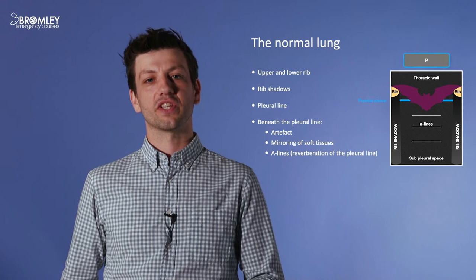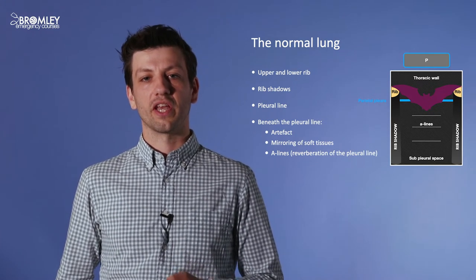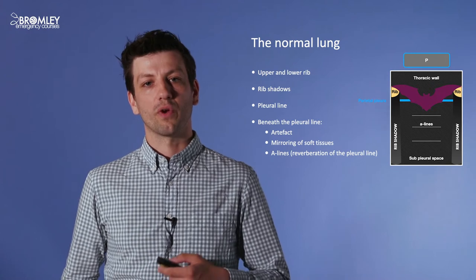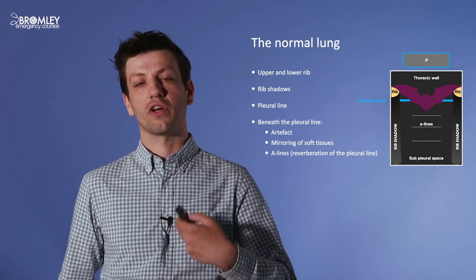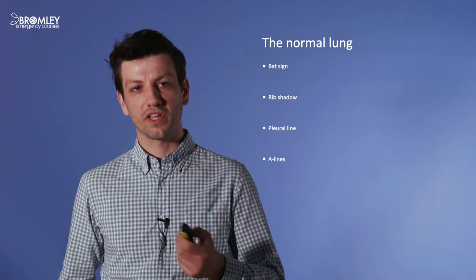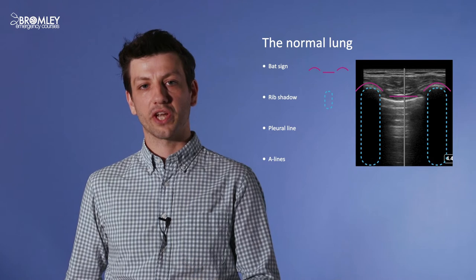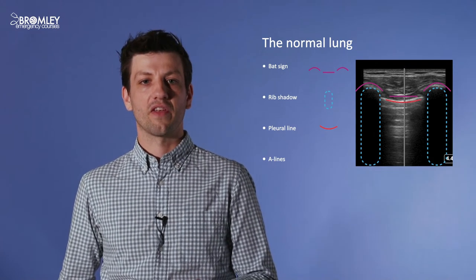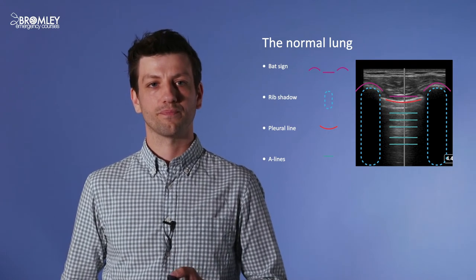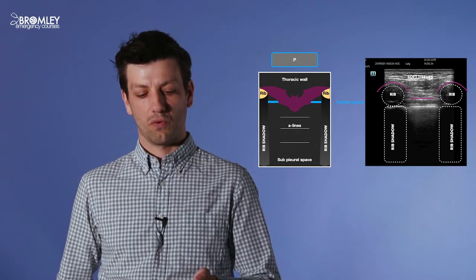Here is a schematic of a normal lung. We see the ultrasound probe and what our image would look like. The bat sign is formed by two ribs with rib shadows beneath and the pleural line in between. We can also see A lines in this schematic — reverberation artefacts of the pleural line. Here the schematic and ultrasound image are shown side by side, demonstrating all of those normal lung features including the bat sign, rib shadows, pleural line, and A lines.